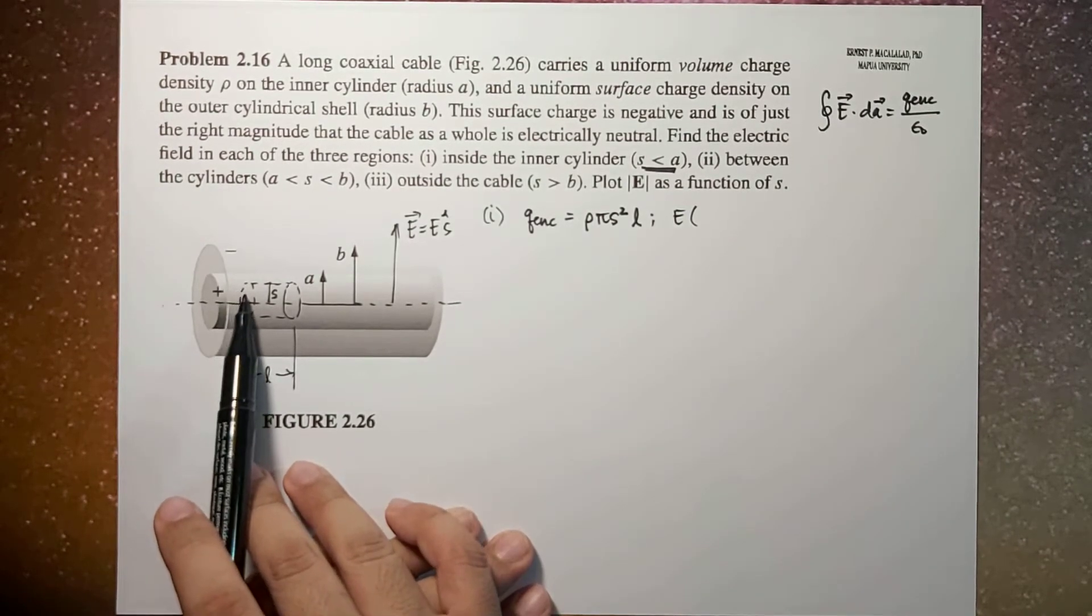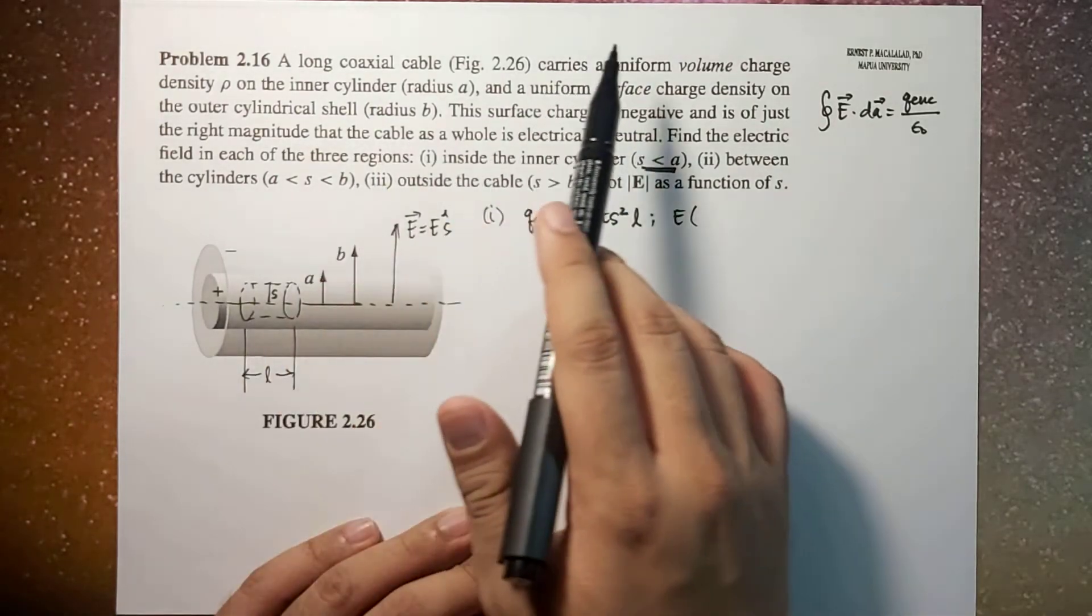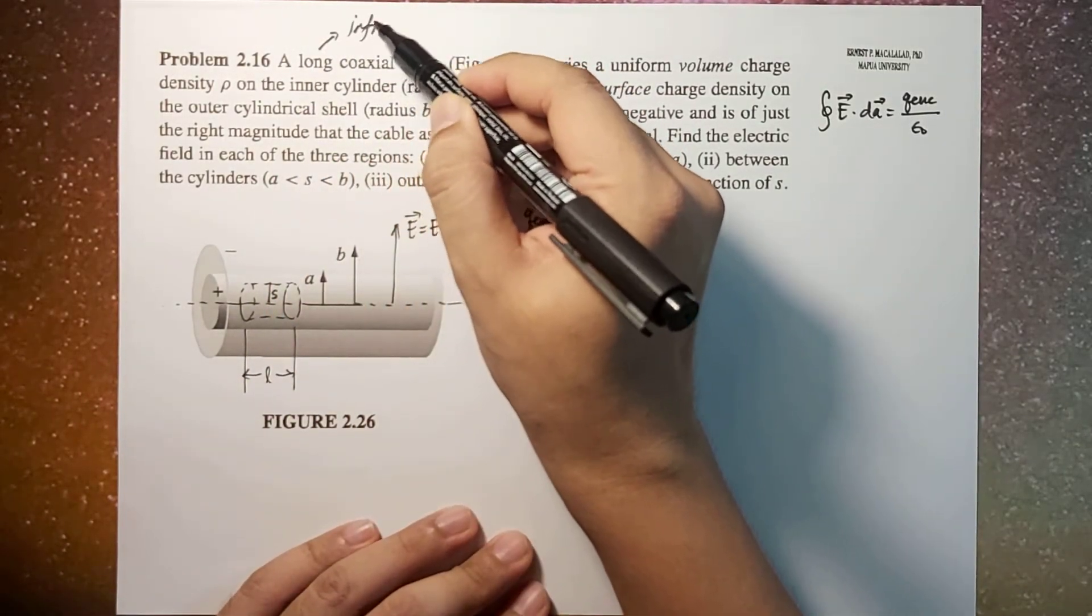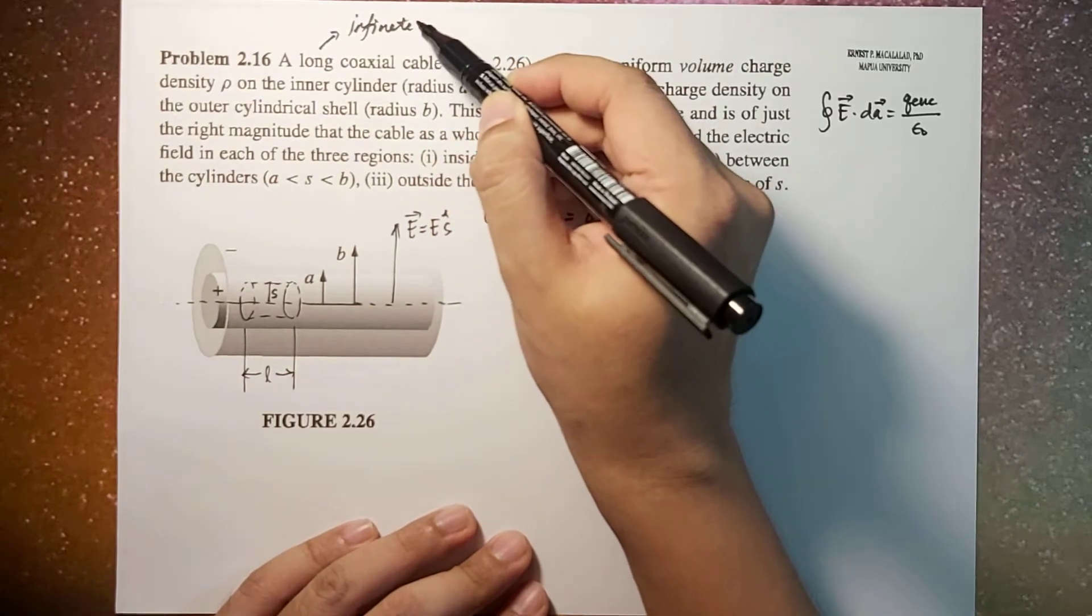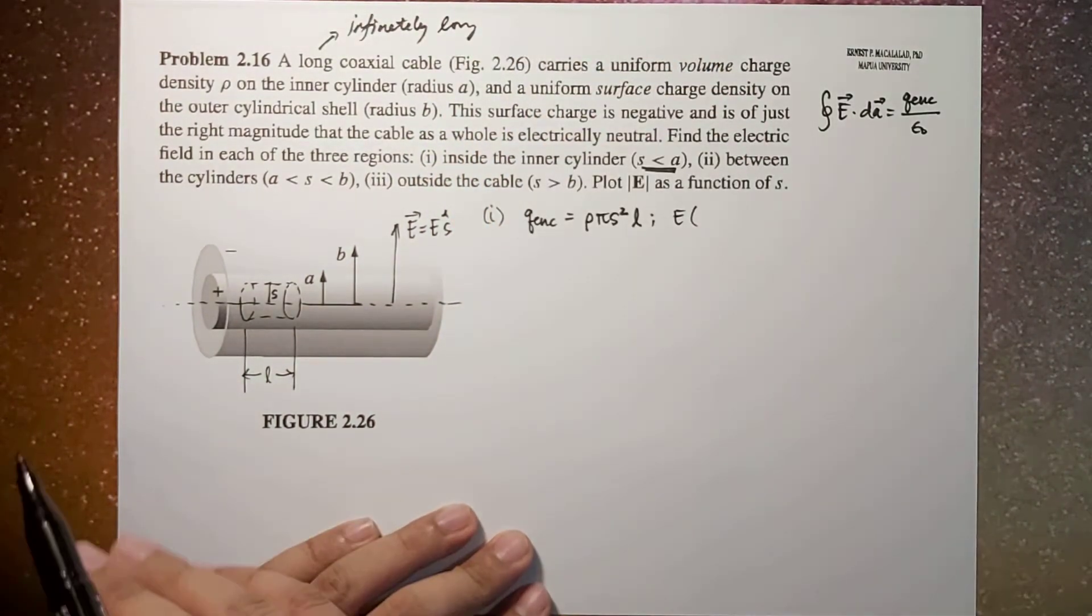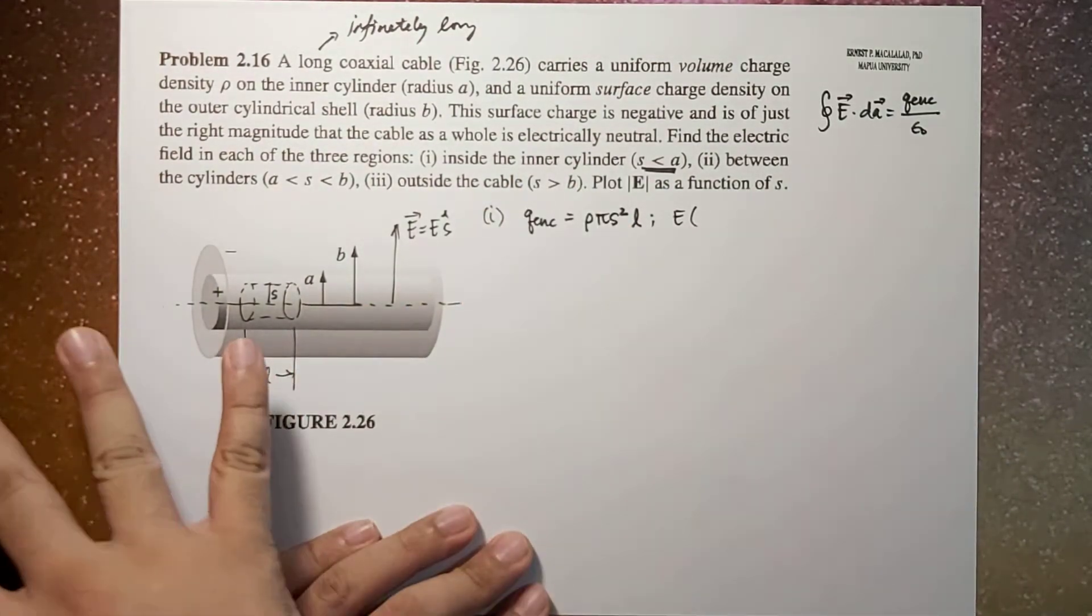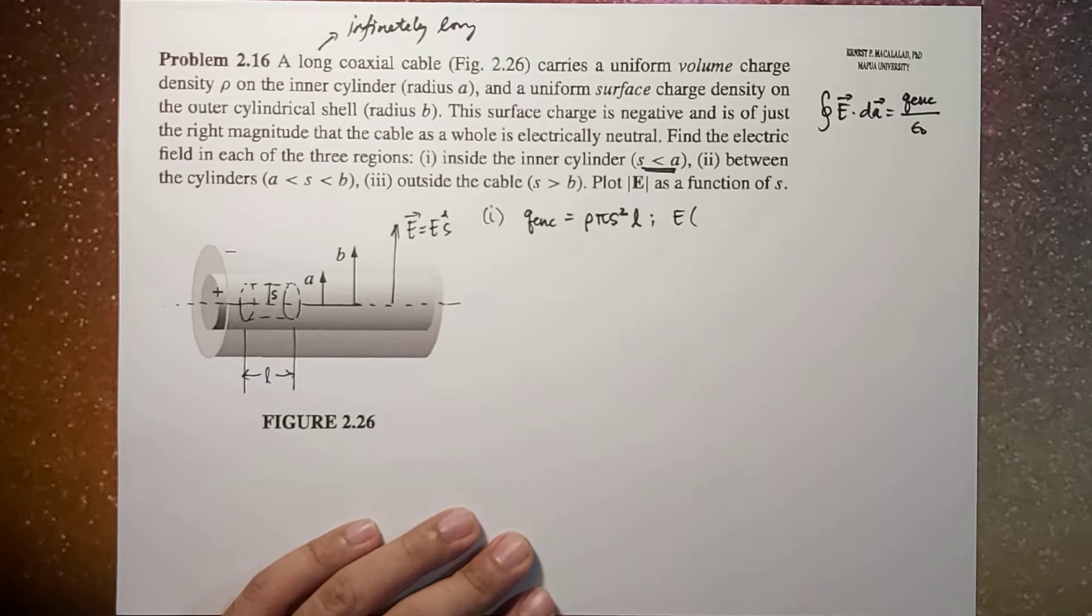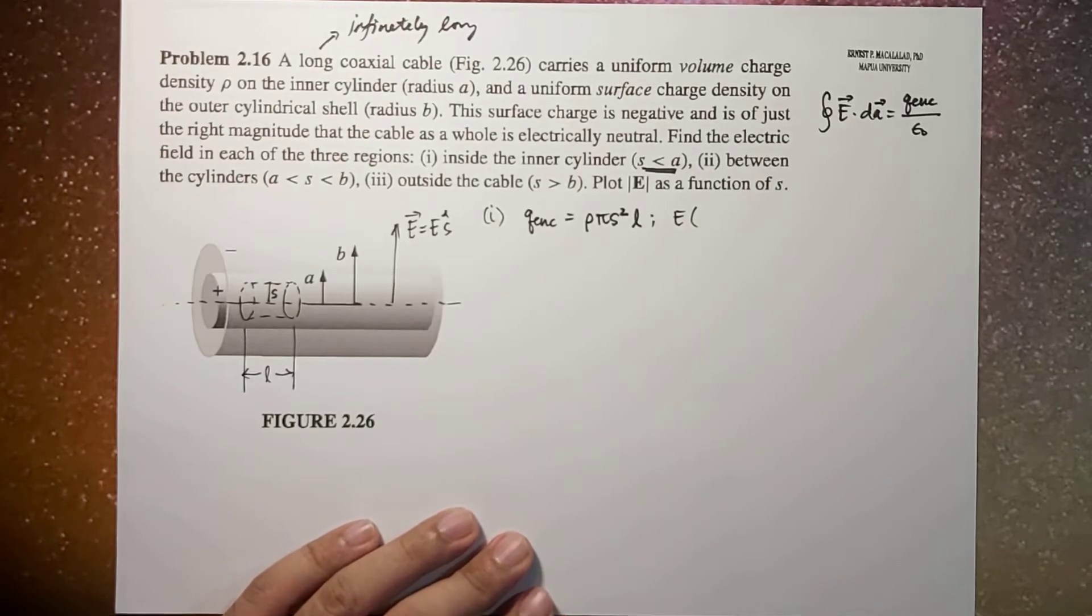The sides—because this is infinitely long, long means infinitely long—so that means the sides of your coaxial cable will not have an effect on the calculation of the electric field.